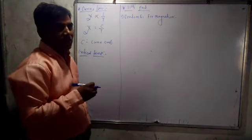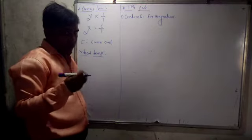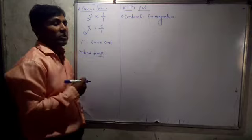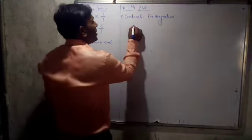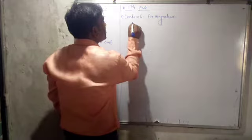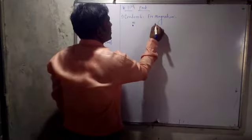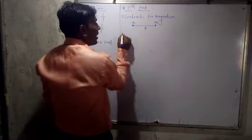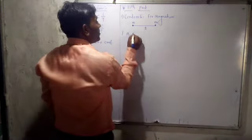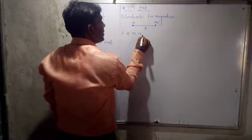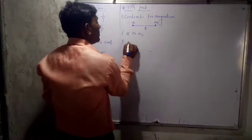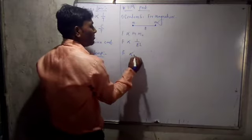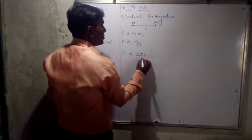This force is directly proportional to the product of two charges and inversely proportional to the square of distance between them. The magnetic force is directly proportional to the product of two poles M and M0, and inversely proportional to the square of distance between them. So force is directly proportional to M times M0 upon R square.